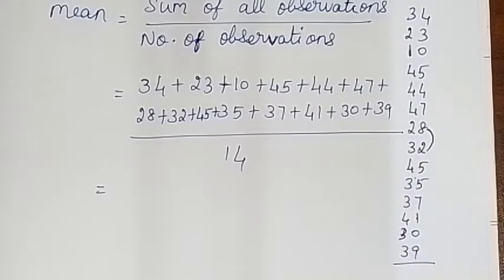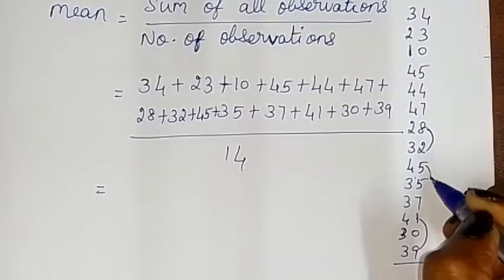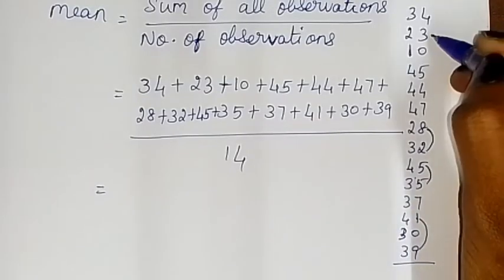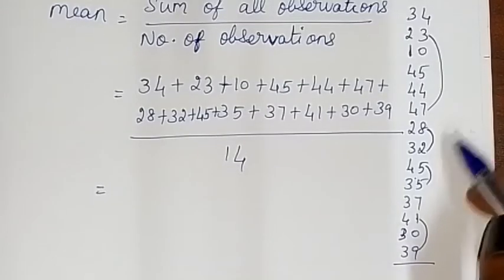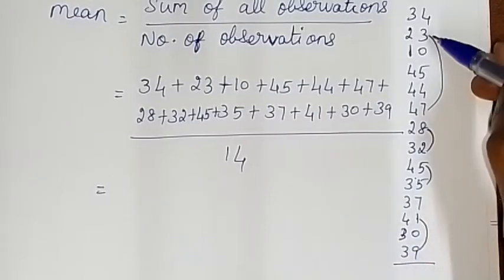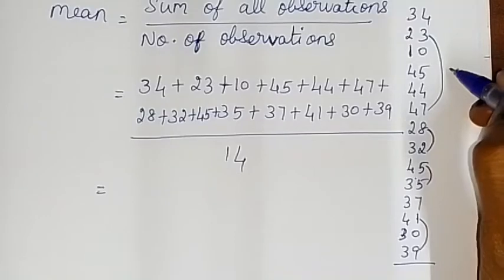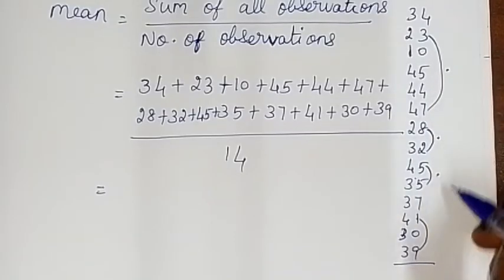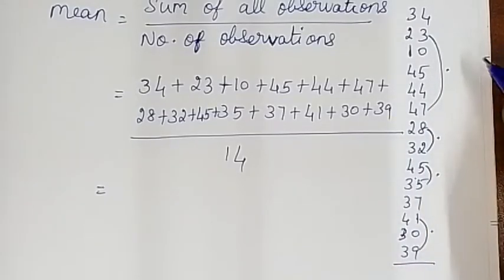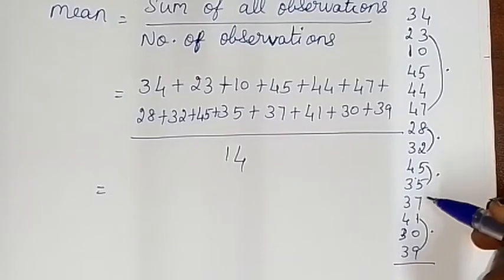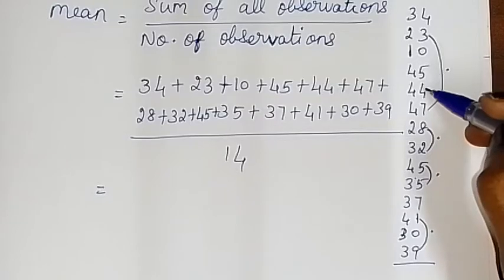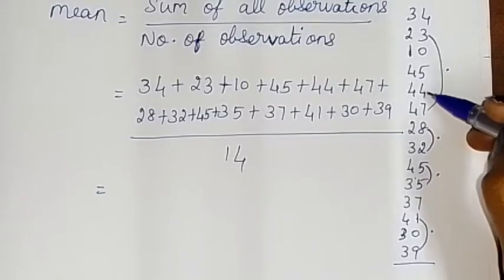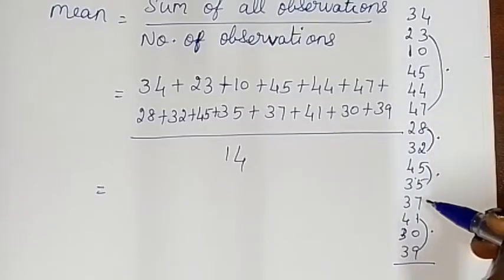We combine numbers that make 10 together. So 8 plus 2 is 10, 9 plus 1 is 10, 5 plus 5 is 10, and 7 plus 3 is 10. So we group these pairs to make 10s. Then the remaining numbers: 5 plus 4 is 9, 9 plus 4 is 13, and 13 plus 7 is 20.